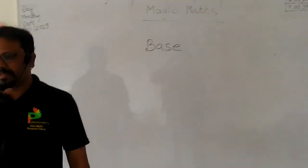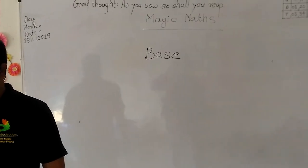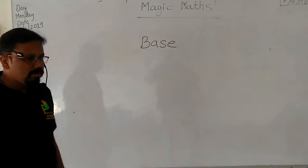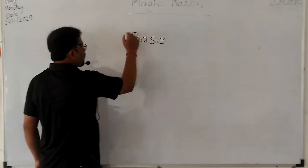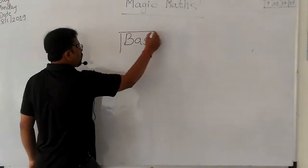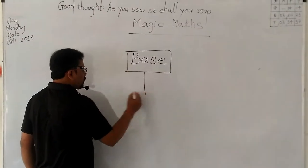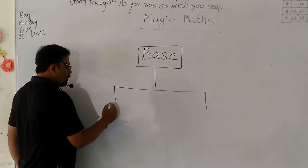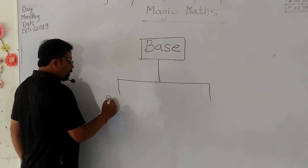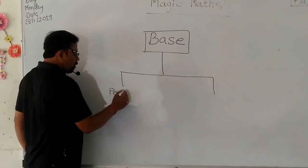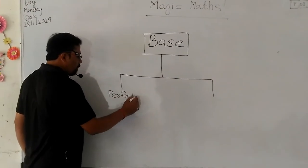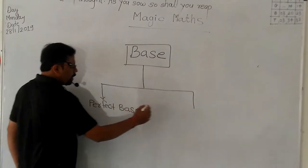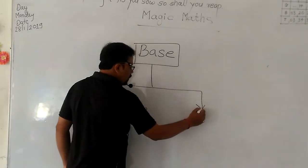First chapter: BASE. In Vedic Mathematics, there are two bases. One is called PERFECT BASE, and another is called SUBBASE.